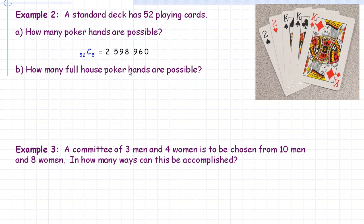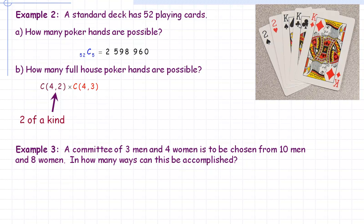Part b asks how many full house poker hands are possible. A full house is a two-of-a-kind and a three-of-a-kind — for example, kings over twos. Since there are four of each card in a standard deck, selecting the pair is 4 choose 2, and selecting the three-of-a-kind is 4 choose 3. It's a combination because the order you hold the cards doesn't matter — the same three kings in any arrangement are still the same three kings.